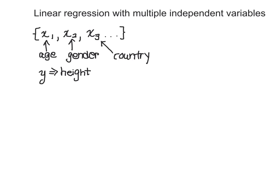Now we could create separate linear regression models. For each observation of age — not including gender or country — we could say the height y is equal to some y-intercept b0 plus some coefficient beta times x sub 1i. We would have a set of many different ages, and for each age observation we would have a height using this equation.